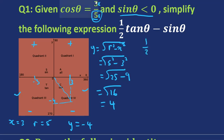So we've got half of tan theta. We know that tan is actually y over x. So y is negative 4 over x, and x is 3, minus sine of theta. Now sine is y over r, opposite over hypotenuse. So y is negative 4 over r, and r is 5.